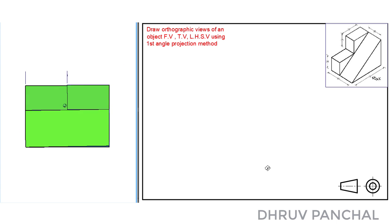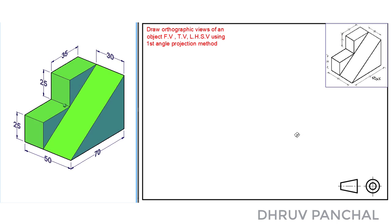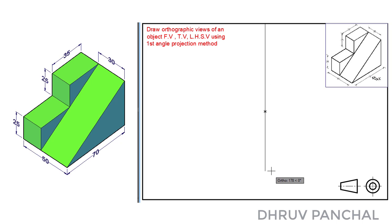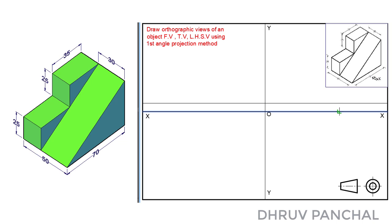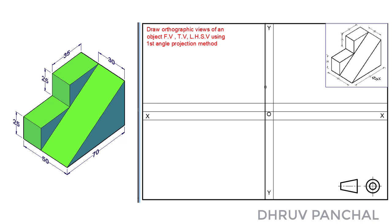To solve this problem, let us observe the different views of this given 3D object. With the help of a roller scale, draw a vertical line and a horizontal line. Name the horizontal line as XX and the vertical line as YY, and name the intersecting point as O. Draw a horizontal line parallel to XX above and below at a distance of 10 mm, and similarly draw a vertical line parallel at a distance of 10 mm. Mark the points in each quadrant as shown — these are the reference points for drawing the views in each quadrant. You can take any distance as per your requirement.